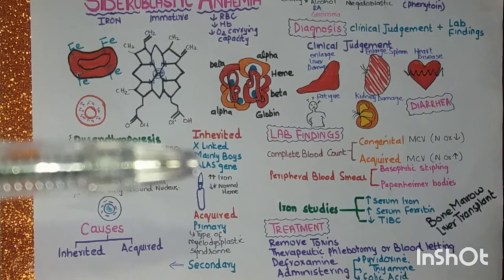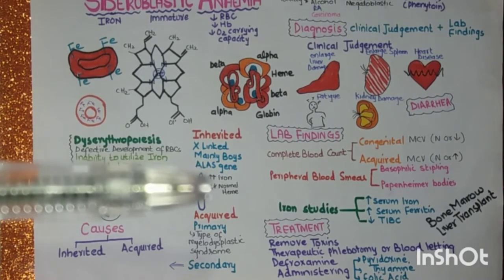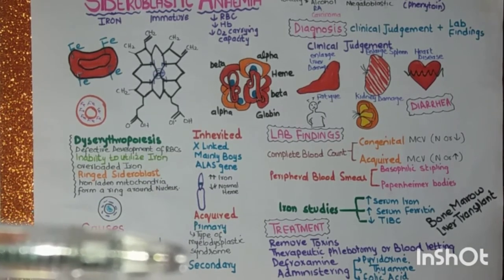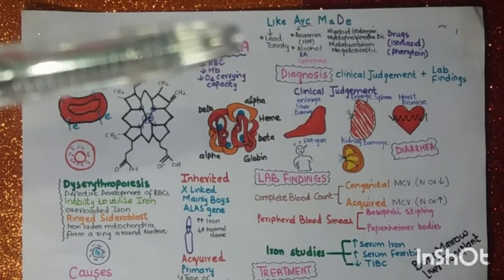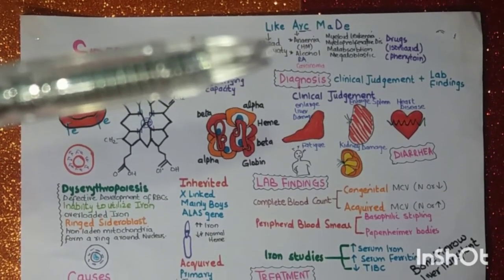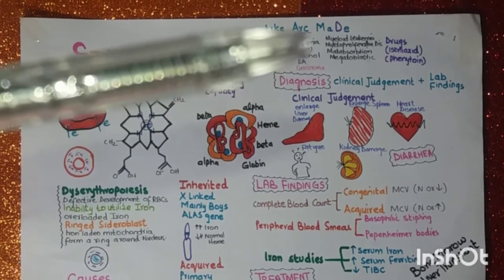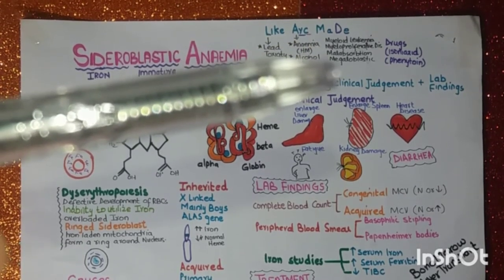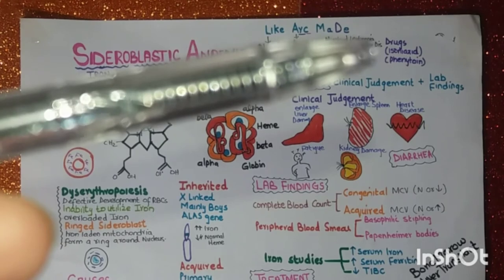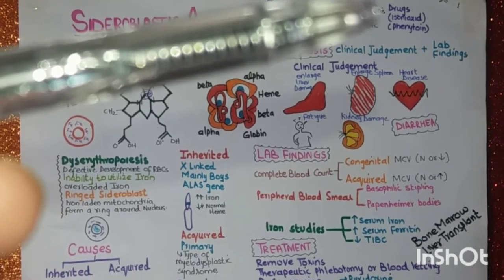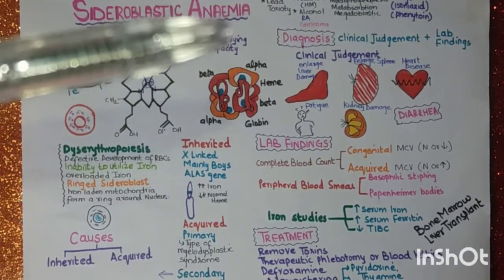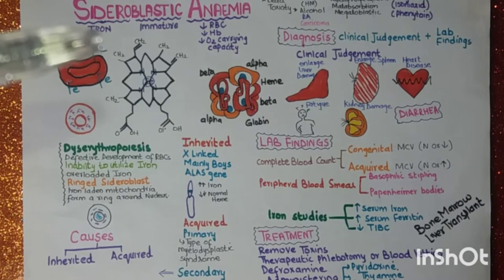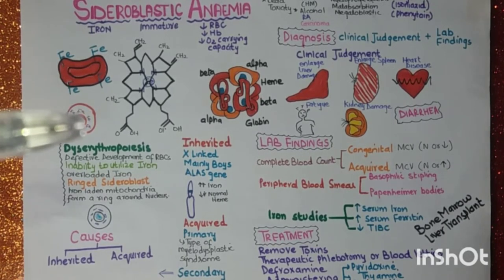There is a mutation in the ALAS gene. In the acquired form, there is primary and secondary. The primary is a type of myelodysplastic syndrome. For the secondary causes, memorize the mnemonic ARC MET: Alcohol, Rheumatoid arthritis, Carcinoma, and Myeloid — leukemia, myeloproliferative disorder, malabsorption, megaloblastic anemia — and drugs like isoniazid. ARC MET is a mnemonic because in sideroblastic anemia we see ring sideroblasts, and from the ring comes 'arc.'